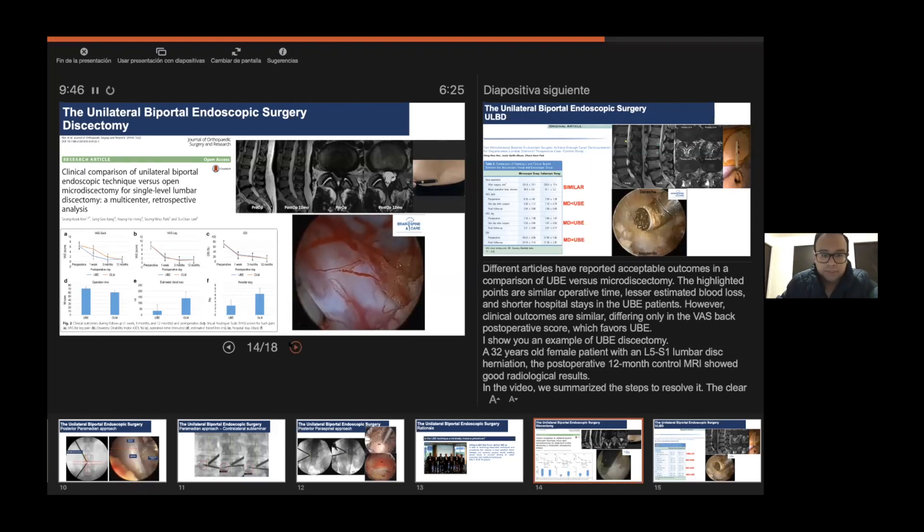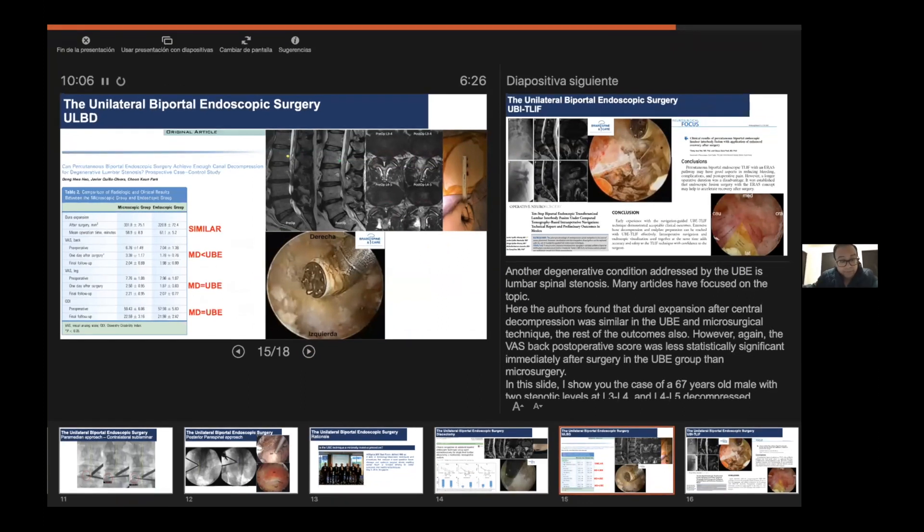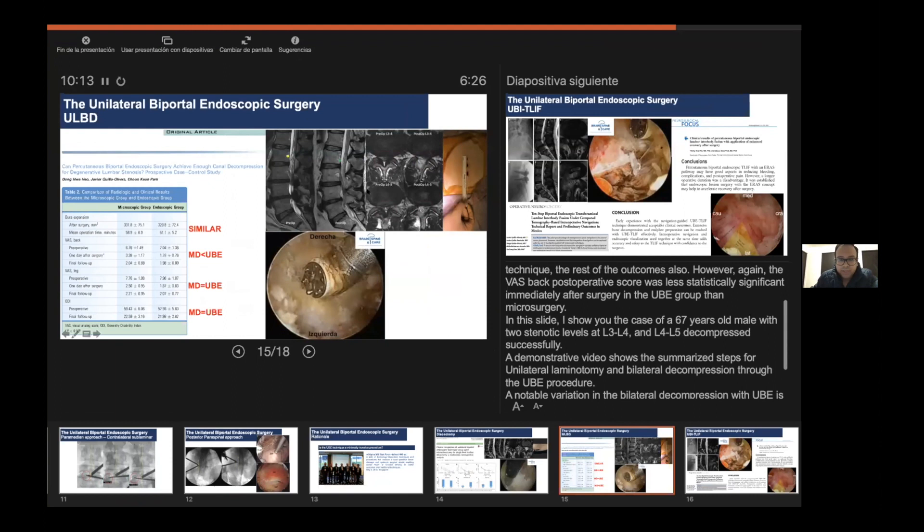Also we try to minimally damage the annular ligament to avoid recurrence, and then we have to observe finally the neural elements free. We have total control of the neural elements with this technique. Another degenerative condition addressed by UBE is lumbar spinal stenosis. Many articles have focused on this topic. Here the authors found that neural expansion after decompression was similar in the UBE and microsurgical technique.